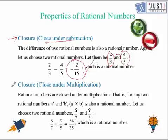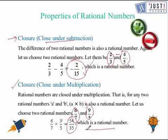Now we check under multiplication. We will take an example of 6 over 7 and 9 over 5. 6 over 7 multiplied by 9 over 5 gives us 54 over 35, which is a rational number. So we can say that closure property holds under multiplication.